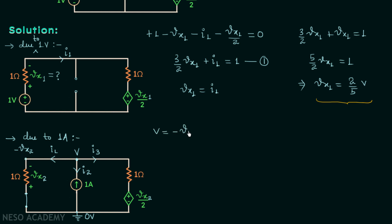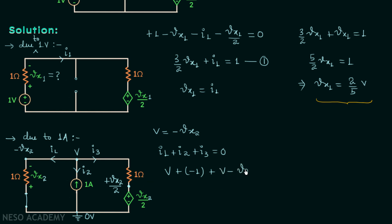V equals minus Vx2, and the dependent source voltage is Vx2 divided by 2. Applying KCL at this node: I1 plus I2 plus I3 equals 0. I1 equals V divided by 1, which is V. I2 equals minus 1 ampere (the 1A source current in opposite direction). I3 equals V minus Vx2 over 2, all divided by 1. Substituting V equals minus Vx2 and simplifying, we obtain Vx2 equals minus 2 over 5 volts.